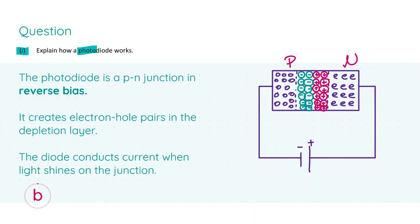In part one we're asked to explain how a photodiode works. A photodiode is a p-n junction in reverse bias — reverse bias is an incredibly important concept behind the operation of a photodiode. In a reverse bias configuration, the negative terminal of the battery is connected to the p terminal and the positive terminal is connected to the n junction.